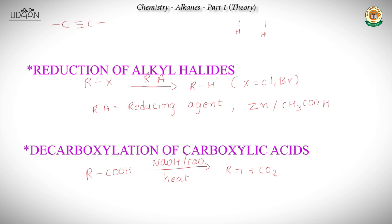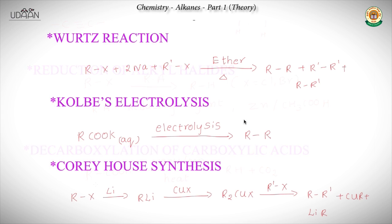Similarly, let's move on to decarboxylation of carboxylic acids. In decarboxylation, we start with a carboxylic acid and treat it with soda lime - that is NaOH in the presence of CaO. When we heat it, it loses CO₂ and we get an alkane.